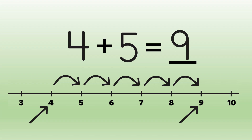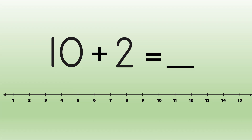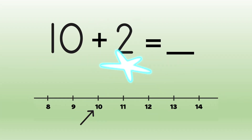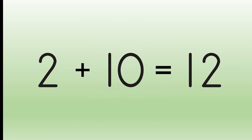If you have one greater addend and one lesser addend, start with the greater addend and count up the smaller number to find the sum. Two plus ten equals blank — switch the addends around. Ten plus two equals blank. Start at ten and count up two: one, two. We get twelve. Ten plus two equals twelve, and two plus ten is also twelve. The sum is twelve.